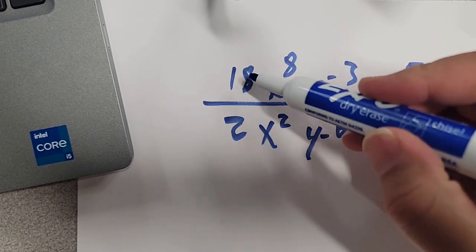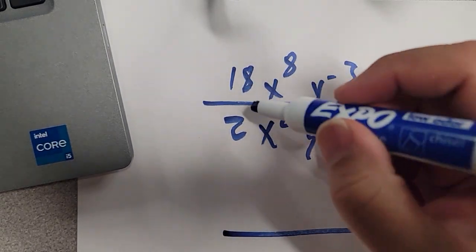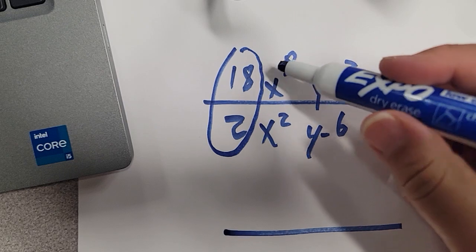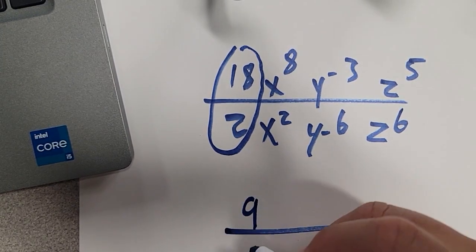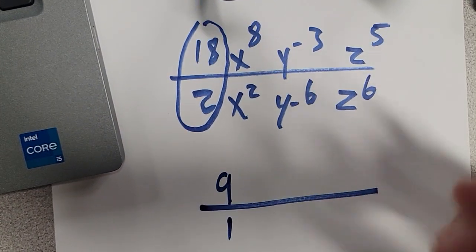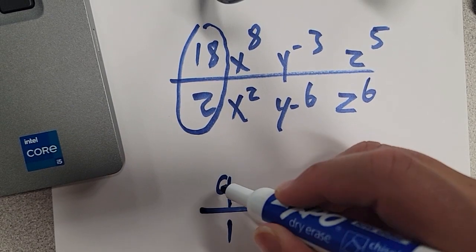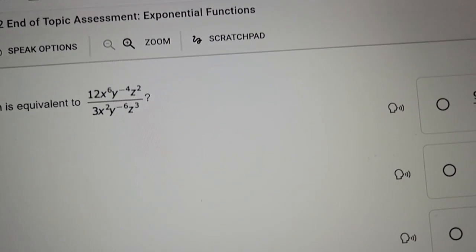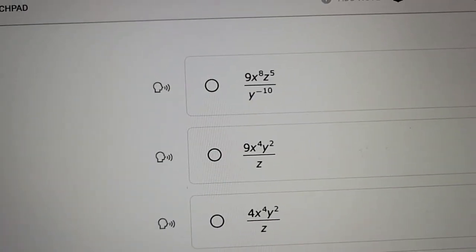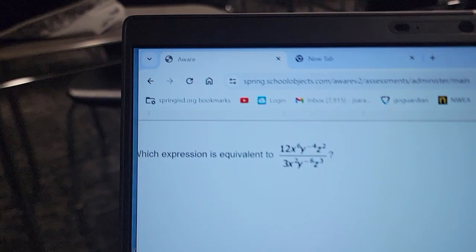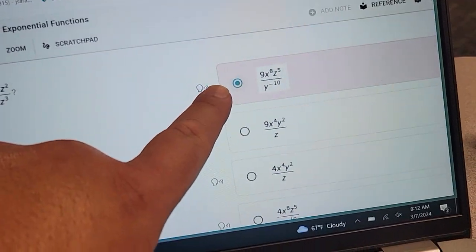The first thing you want to do is just plug the regular numbers into the calculator. What is 18 divided by 2? If you put 18 divided by 2 in the calculator — I'm just talking about the regular numbers, not the exponents — you get 9. Technically there's a 1 on the bottom, but we don't have to worry about ones. So divide your numbers first; you should be able to eliminate two answers. On my example it ends up being 9.